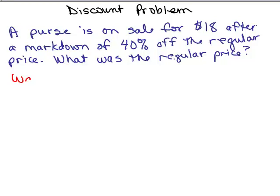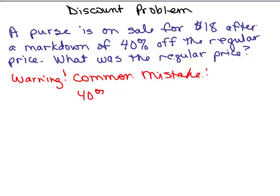Okay, first of all, warning. The percent off is always off the regular price and you don't know the regular price. So a common mistake is to do 40% of 18. But you don't mark it off of what the final sale price is going to be. You're going to mark it off whatever the regular price was.